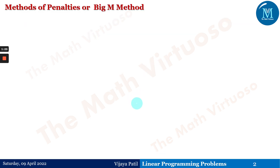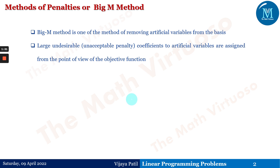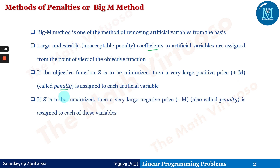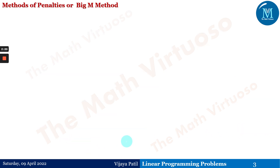This method is one of the methods of removing artificial variables from the basis. Large, undesirable, unacceptable penalty coefficients are assigned to the artificial variables in the objective function. If the objective function Z is to be minimized, then a very large positive price, that is plus M called penalty, is assigned to each artificial variable. If Z is to be maximized, then a very large negative price, that is minus M, is assigned. So we assign minus M for the maximization problem and plus M for the minimization problem, where capital M is greater than zero.